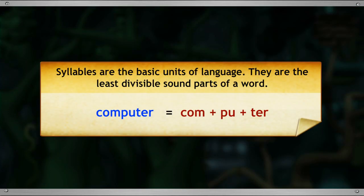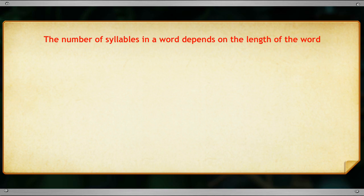Syllables are the basic units of language. They are the least divisible sound part of a word. In a word, the minimum number of syllables is one, whereas there is no maximum limit to it. It depends on the length of the word.